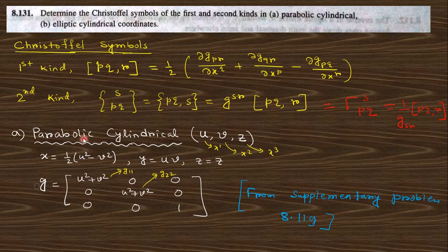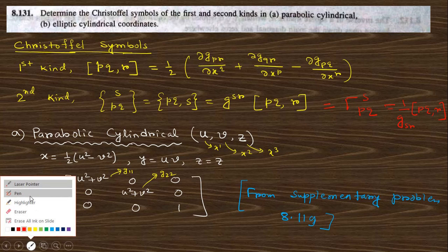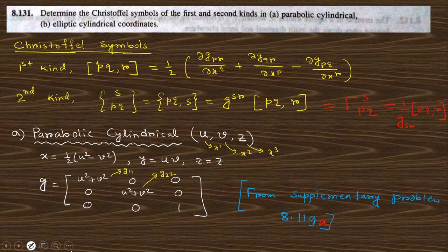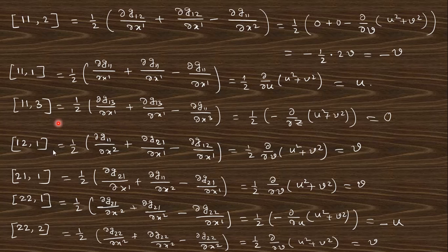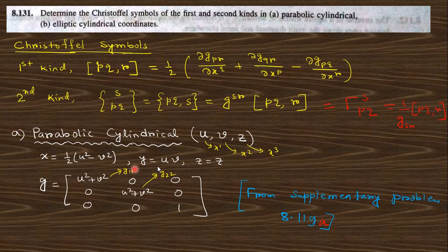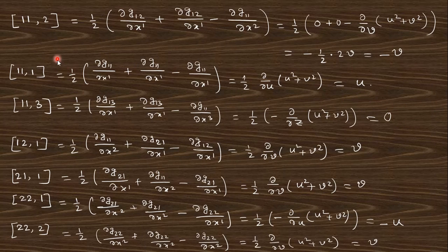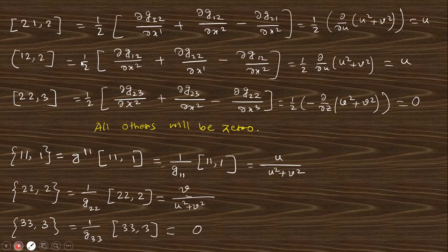In case of parabolic cylindrical the coordinates will be u v z, so this is x1 x2 and x3 and the G will be like that. This will be obtained from the supplementary problem solution 8.119A. We got the G then you can obtain that G11 and G22 will be present. You must there will be either 11 or 22 in this form. Just put this value, you will get this answer. You can see here 11 or 22 will be present all this term.